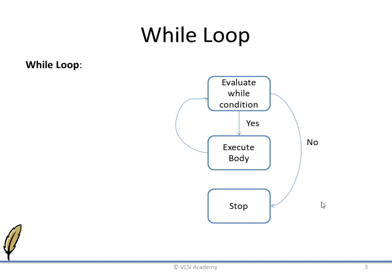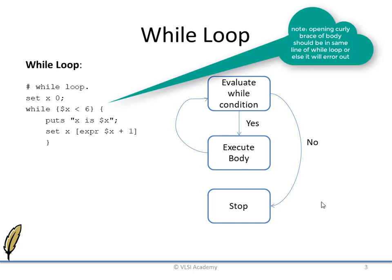Let us see one example where x is set to 0. The code will keep on looping until the value of x is lesser than 6. This loop will exit when the value of x reaches 6, and until then it will keep on looping. The output will look something like this.